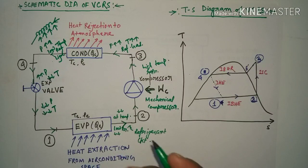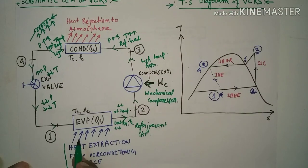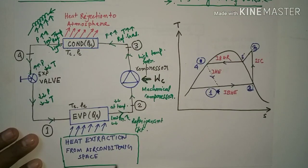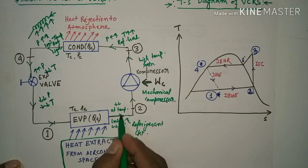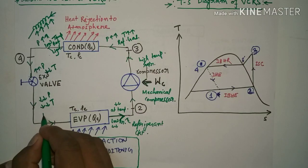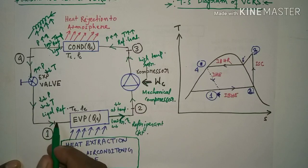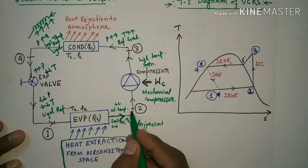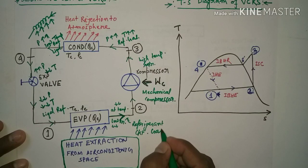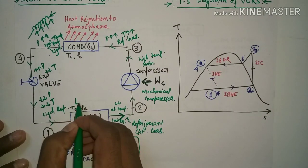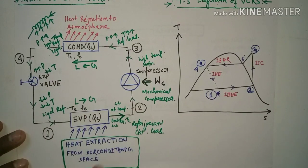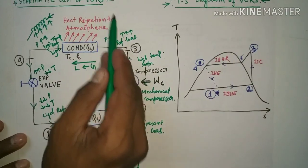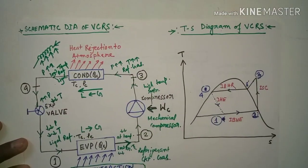After the expansion valve we get low pressure and low temperature refrigerant. When this passes through the evaporator, evaporation occurs. In evaporation, the refrigerant takes heat from the air conditioning space — the space we need to maintain for air conditioning. The low pressure and low temperature liquid refrigerant undergoes a state change in the evaporator from liquid to gas. This entire process is the VCRS — Vapor Compression Refrigeration System.